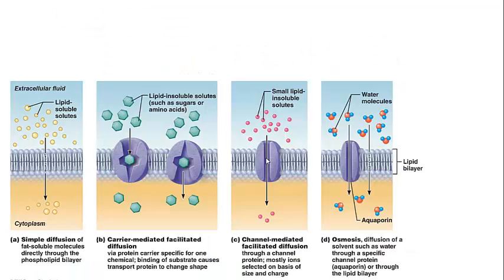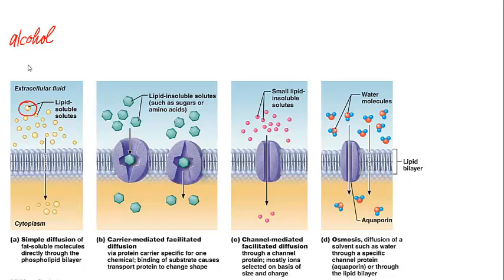Letter A shows simple diffusion — these would be lipid-soluble substances, so they can easily pass through the membrane. These would be things like alcohol, which is one reason that alcohol passes into our cells very quickly, because it's also a lipid — likes dissolve likes. Other examples would be oxygen as well as carbon dioxide.